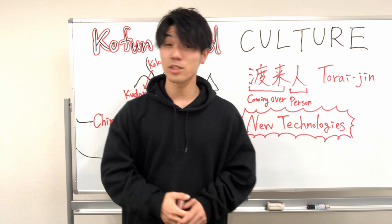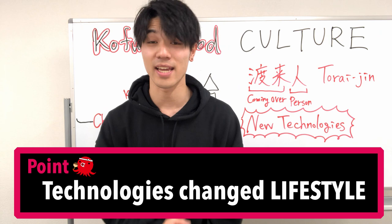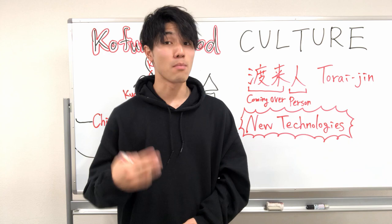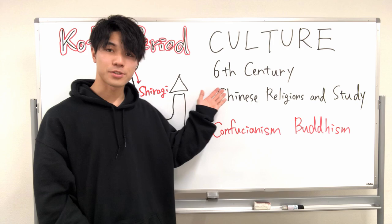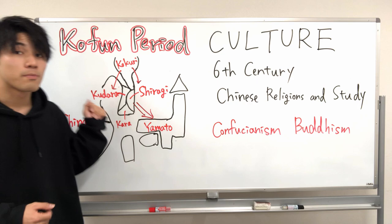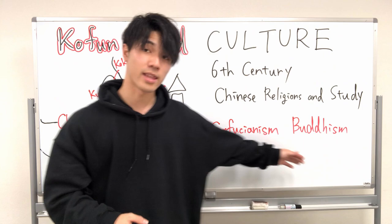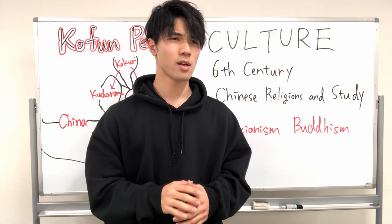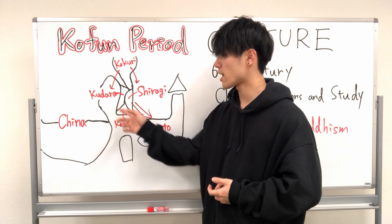The Toraijin also taught how to raise horses and how to write. The Yamato Administration made the most of this knowledge, and new technologies from the continent changed people's lifestyle. The quality of iron farming implements got much higher and productivity remarkably increased. In the sixth century, the closer relationship between Japan and Korea brought Chinese religions and scholarship into Japan — Confucianism and Buddhism came in from Baekje, as Baekje intended to build a better relationship with Japan.